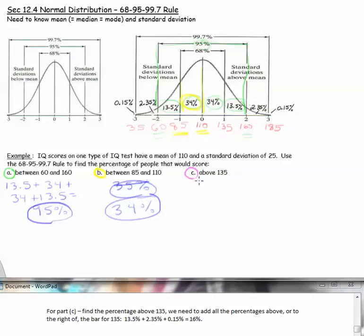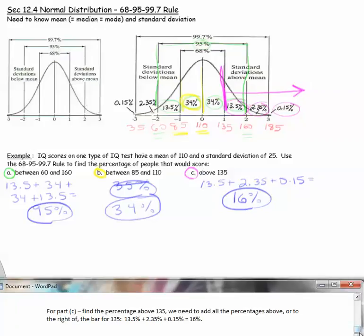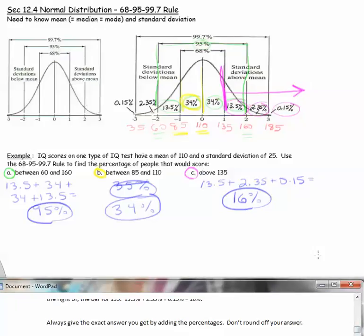Part C, we'll mark the graph with pink. Find the percentage above 135. Here's the bar for 135. We need to add all the percentages above or to the right of the bar for 135, which will be 13.5% plus 2.35% plus 0.15%, which comes out to 16%. Always give the exact answer that you get by adding these percentages. Don't round off your answer for these problems.